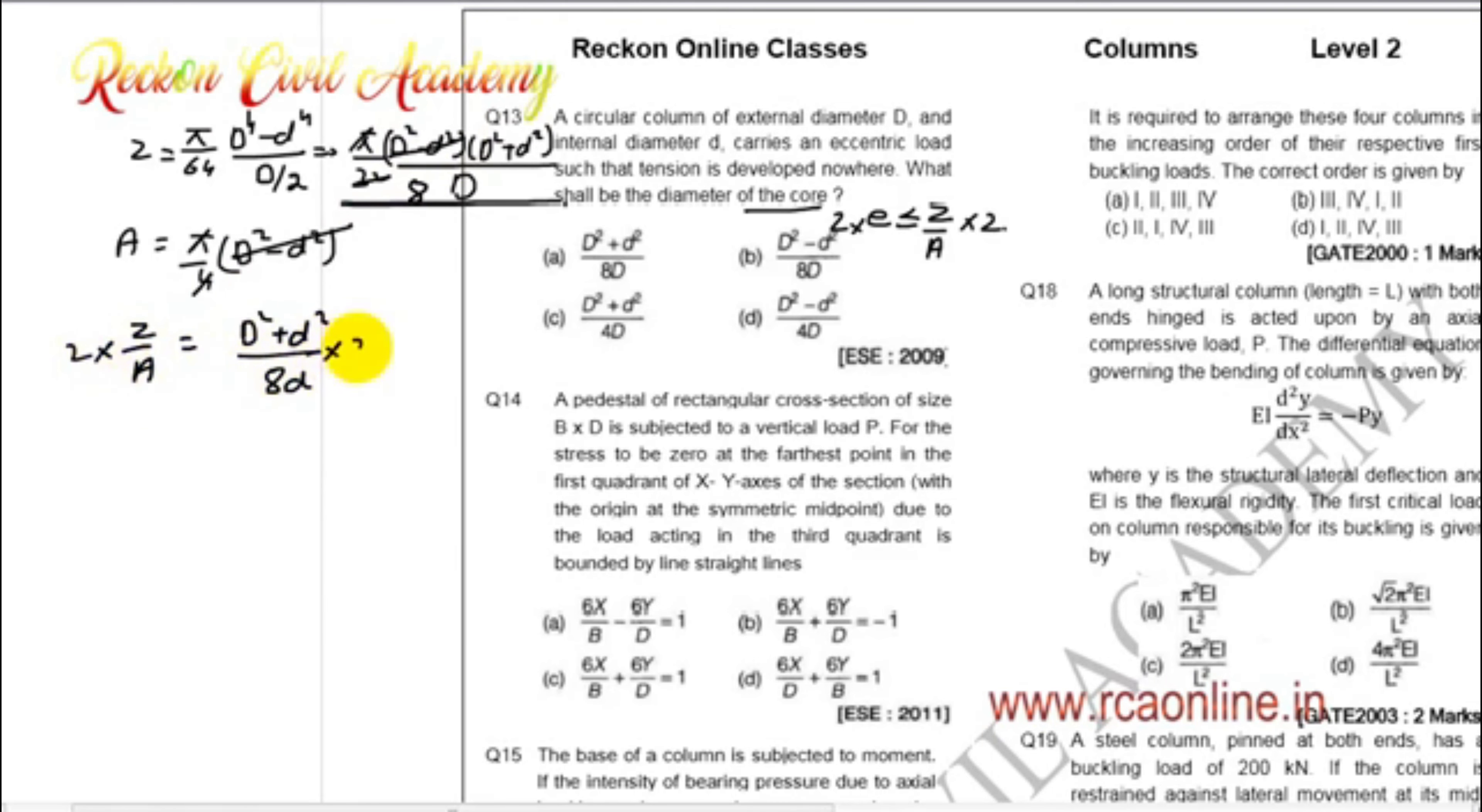Now, this is twice. Because the core is asked, the answer is equal to D square plus D square over 4D.